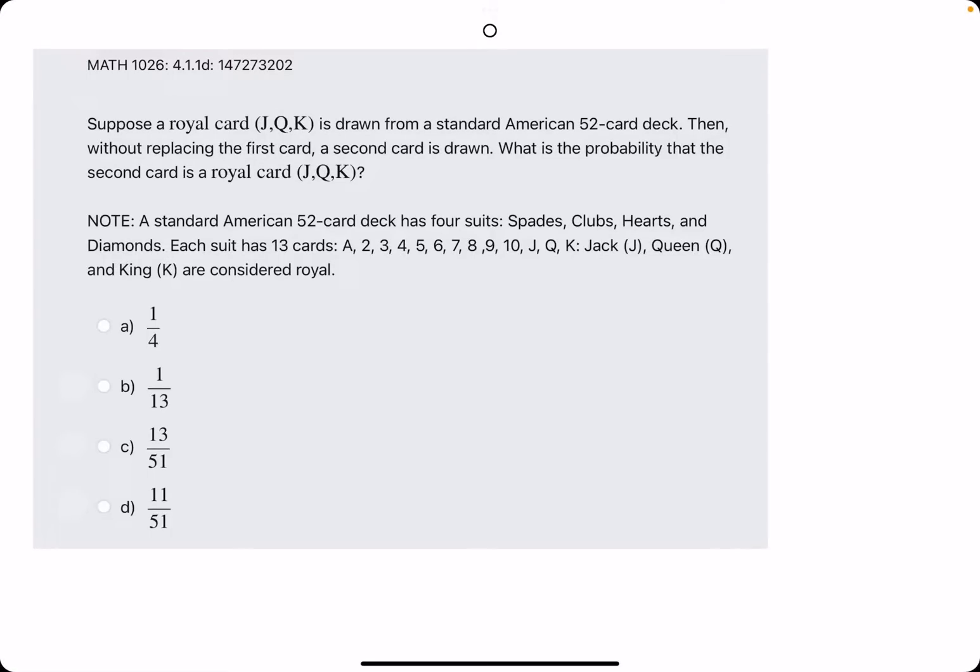Okie dokie. In this problem, they present us with the 52 card deck situation again, but the question is slightly different. They tell us that a royal card has been drawn from a 52 card deck. Then, without replacing the first card, a second card is drawn. What is the probability that the second card is a royal card as well?